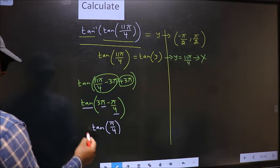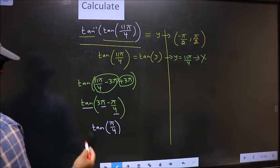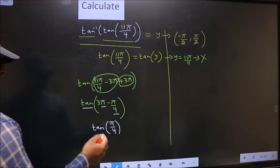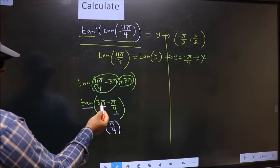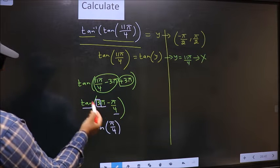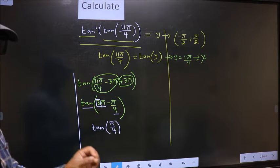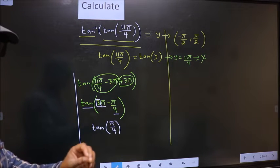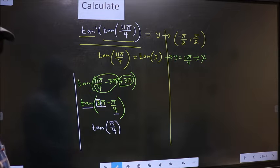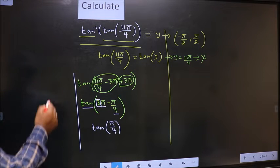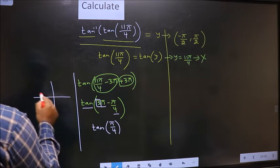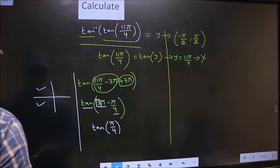Now the question is will we get here plus or minus. To answer that we should look at the number before π which is 3. And 3 is odd.